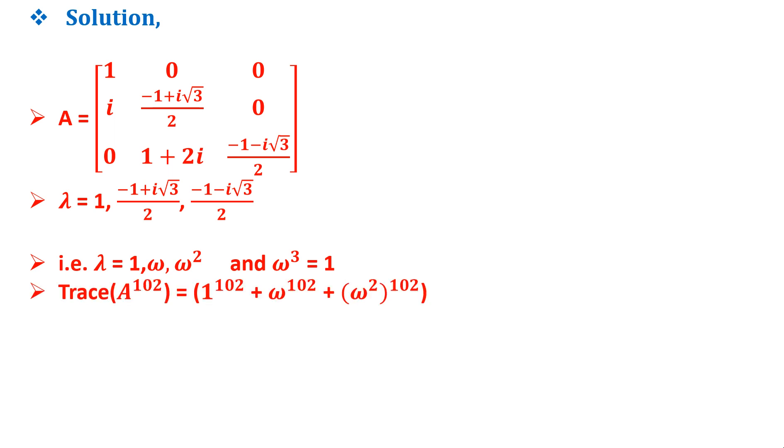Well known roots which implies that the trace of A raised to 102 is equal to 1 raised to 102 plus omega raised to 102 plus omega square raised to 102.